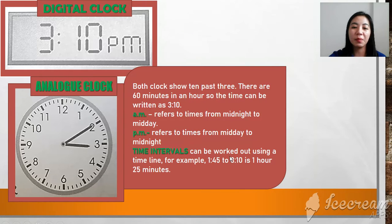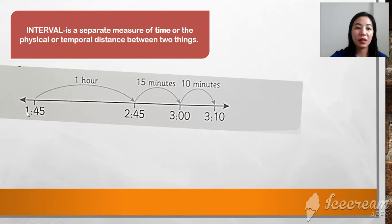Time intervals. The time intervals can be worked out using a timeline. For example, 1:45 to 3:10 is 1 hour 25 minutes. The meaning of interval is a separate measure of time or the physical or temporal distance between two things. So this is 1:45 to 3:10. Time interval is 1 hour and 25 minutes.